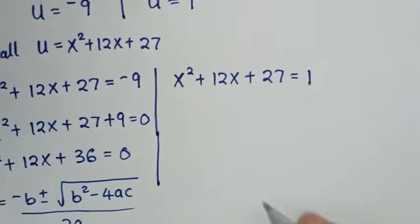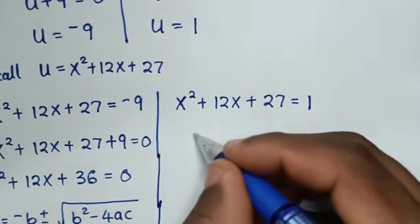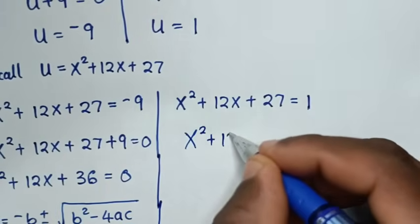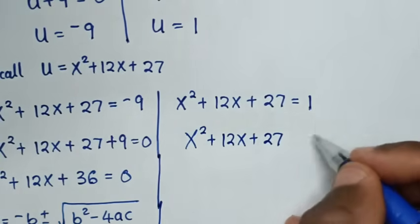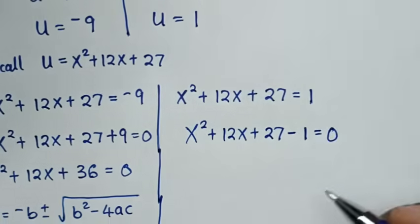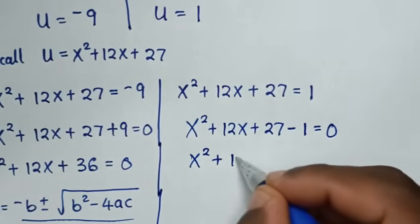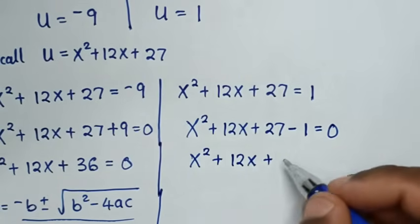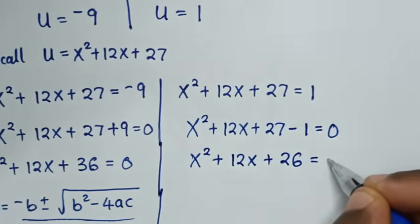Second solution: x²+12x+27 = 1, so x²+12x+26 = 0.